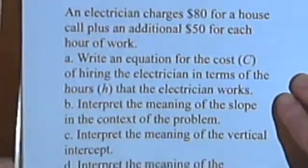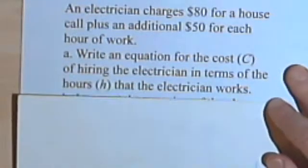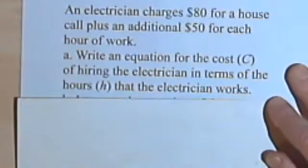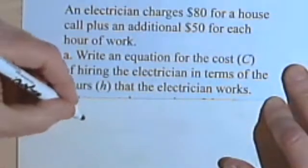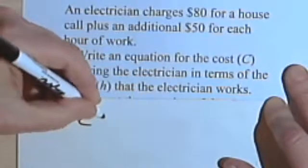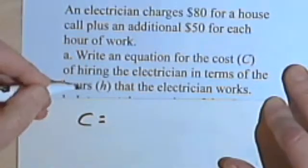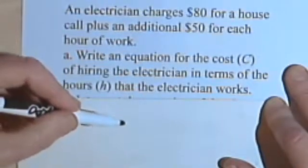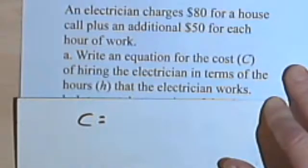When it says write an equation for something, the thing we're writing it for — the cost — is what we start with. So the cost equals. And when it says 'in terms of,' that's going to be our independent variable, probably on the right side of the equation. Let's figure out what the right side should be.